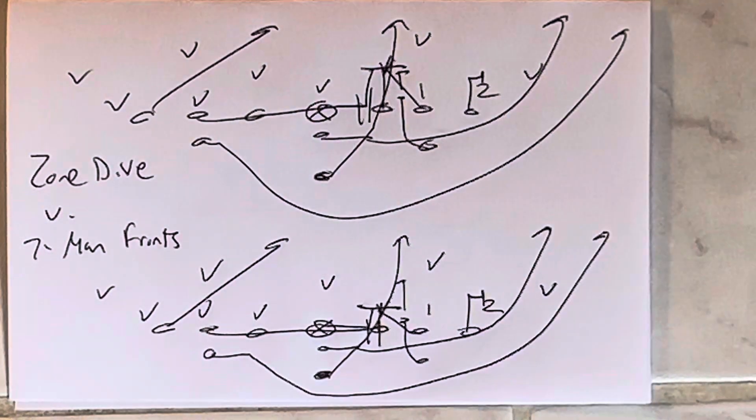If they're that concerned about you throwing the ball to where they have to have two safeties, and you still can't get four yards running zone dive against a seven-man front, you're done, you're going to lose.